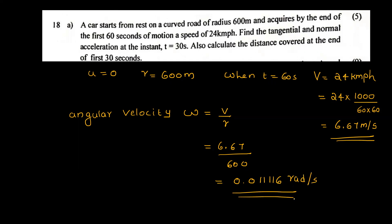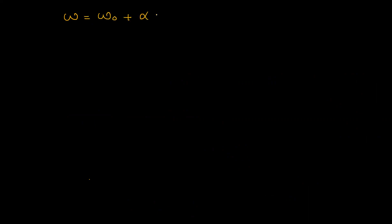We have the final angular velocity omega. The initial angular velocity omega-naught equals the initial velocity divided by radius. Since the initial velocity is 0, omega-naught is 0. Now we calculate angular acceleration alpha using the relation between omega and omega-naught.